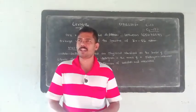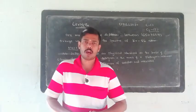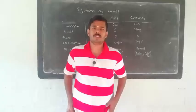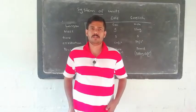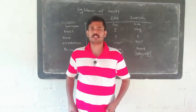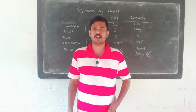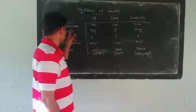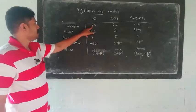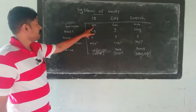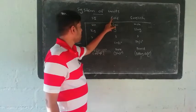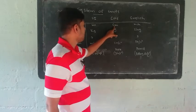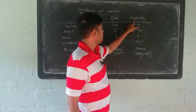These units represent physical quantities in the different systems. For length: in SI the unit is the meter, in CGS the unit is the centimeter, and in the English system the unit is the inch.